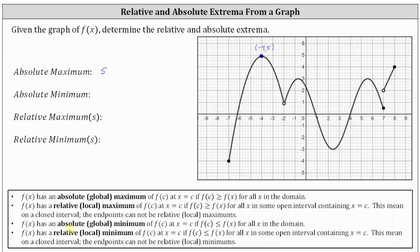f of x has an absolute or global minimum of f of c at x equals c if f of c is less than or equal to f of x for all x in the domain, which means we identify the absolute minimum by identifying the lowest point of all the points on the graph.